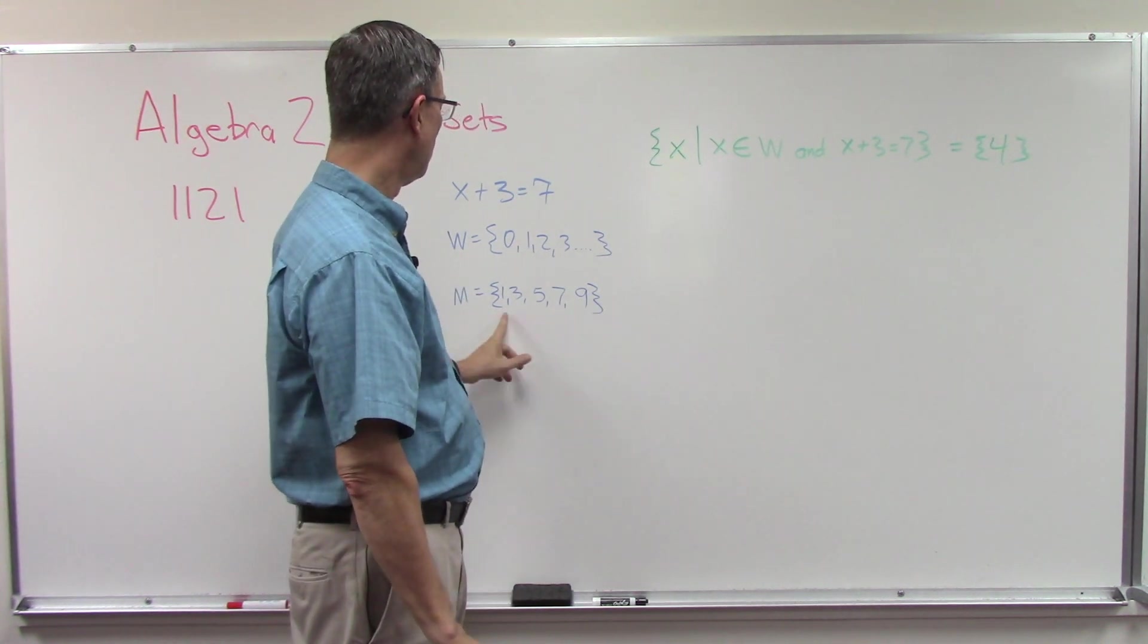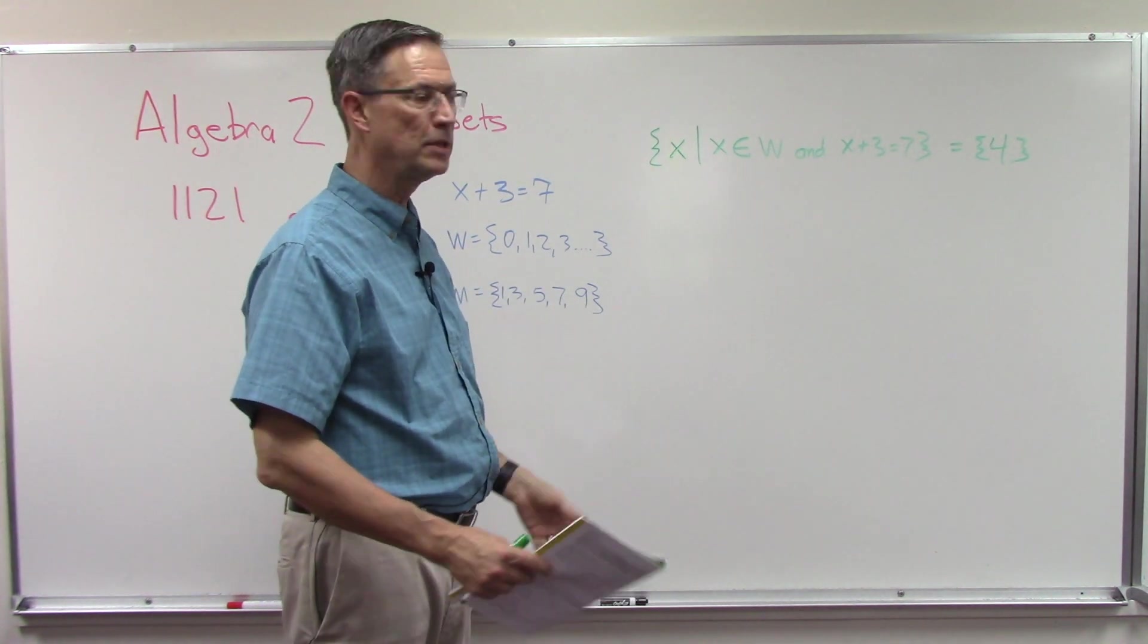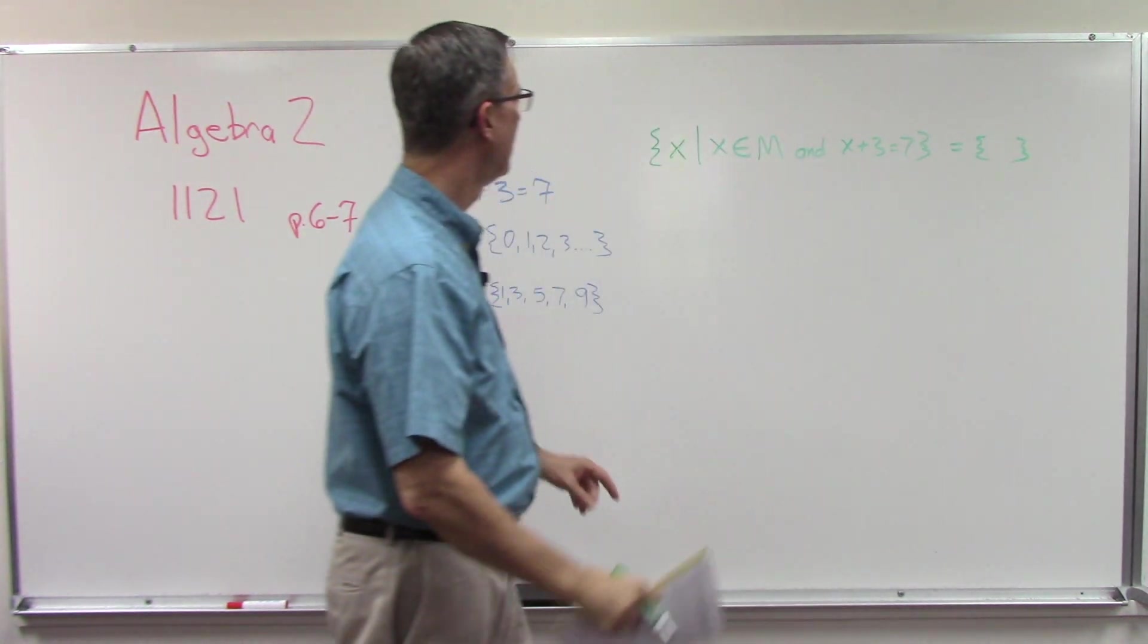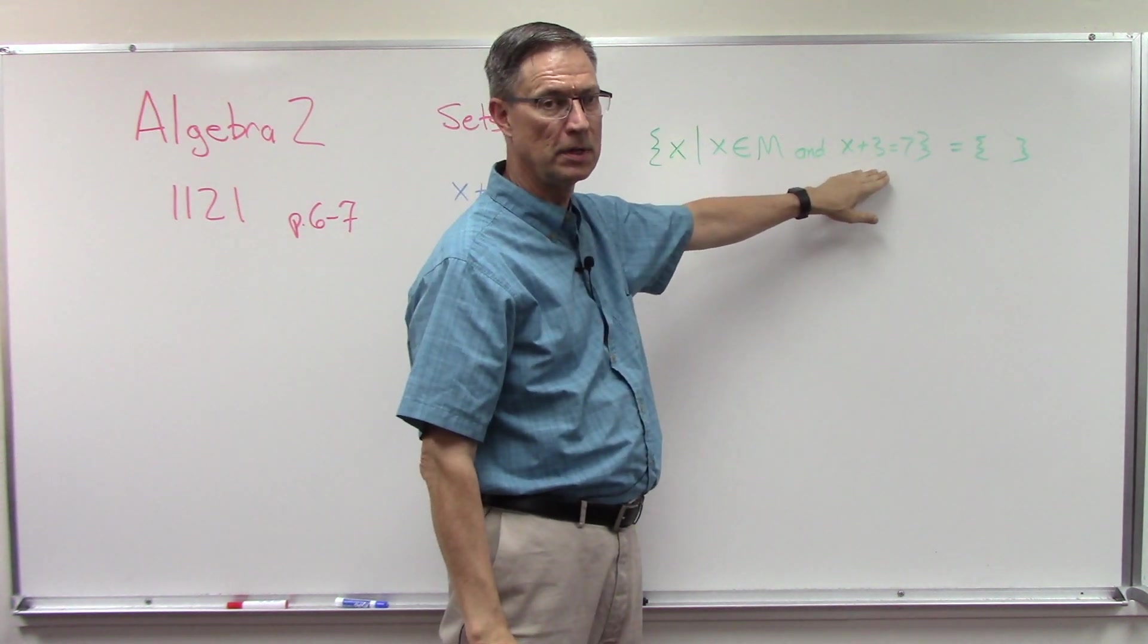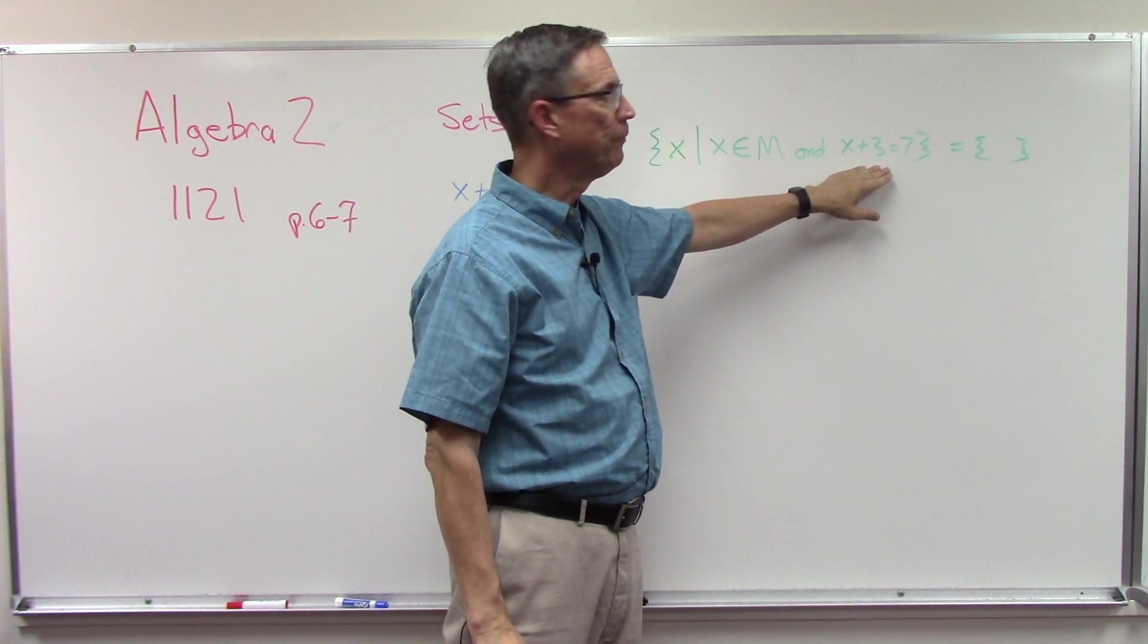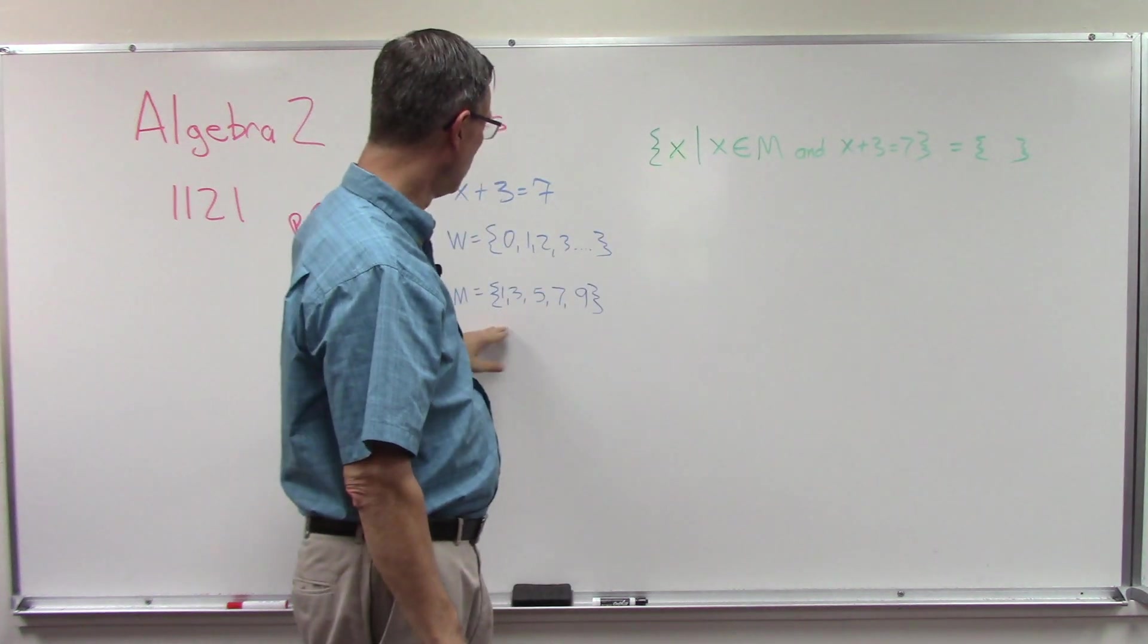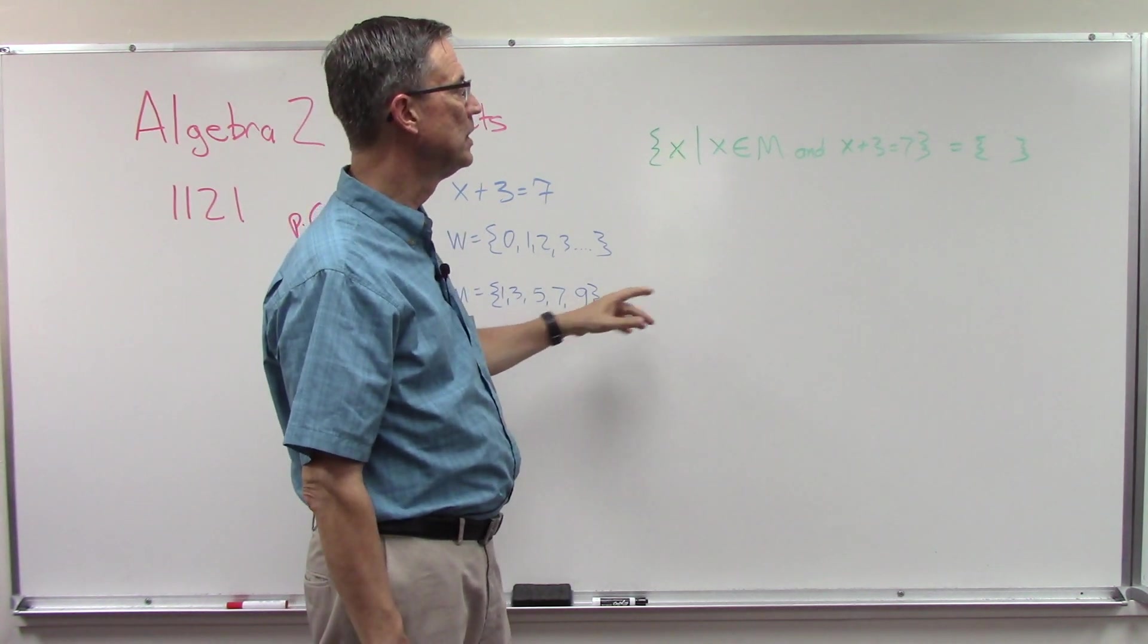And I just put in five numbers, one, three, five, seven, and nine. Just made that up. They're odd numbers where we have a beginning and an end. It's not an infinite set. And so now I'm going to change this. I'm going to turn it upside down and make it an M. So now I need to find a value for x that is in set M and also satisfies this.